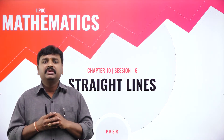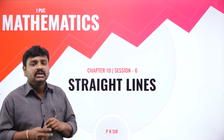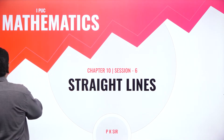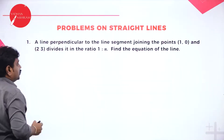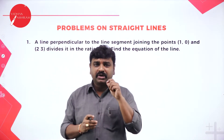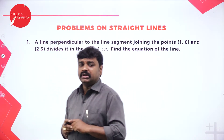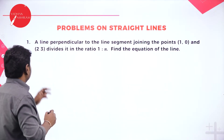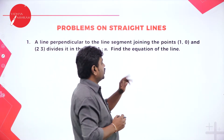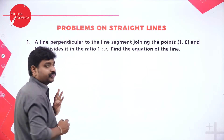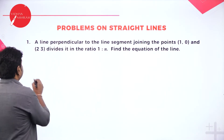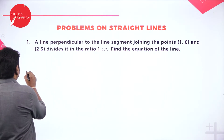These are the different forms which you should be thorough with. Now we will use all the forms and start solving the problems. The very first question: they want a line perpendicular to the line segment joining (1, 0) and (2, 3).